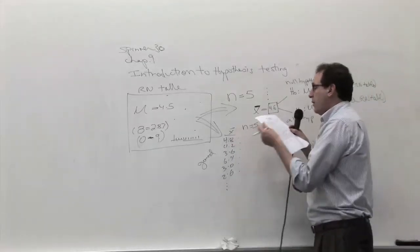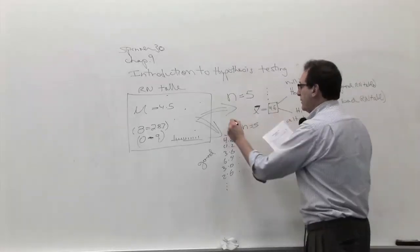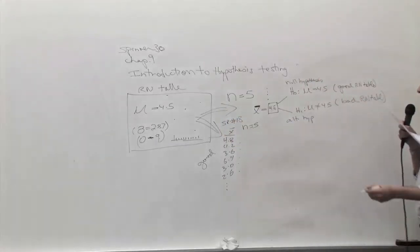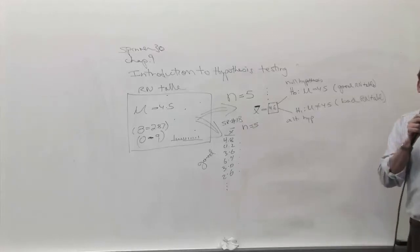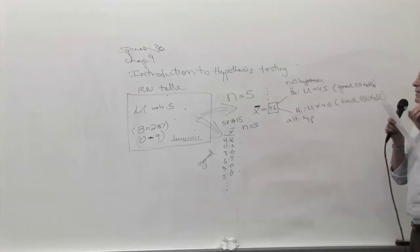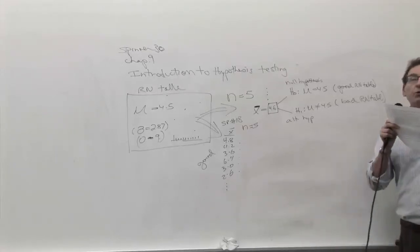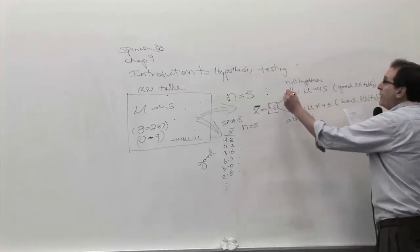is that 4.6 is about as close as you're going to get. And therefore, I would say the table's a pretty good table. Certainly, especially if you give this an important point. We give the benefit of the doubt to the status quo. You don't go around accusing a publisher of publishing a bad table unless you have evidence for that. The guy's innocent until proven guilty.